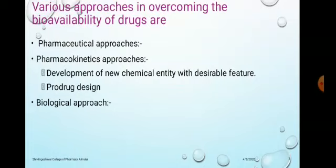Various approaches to overcome poor bioavailability of drugs are: the pharmaceutical approach, the pharmacokinetic approach, and the biological approach. The pharmaceutical approach involves modification of formulation, manufacturing processes, or physical-chemical properties of drugs without changing the chemical structure. The pharmacokinetic approach alters pharmacokinetic properties by modifying the chemical structure, and is categorized into development of a new chemical entity with desirable features, and pro-drug. The biological approach is related to the route of administration, such as changing from oral to parenteral.